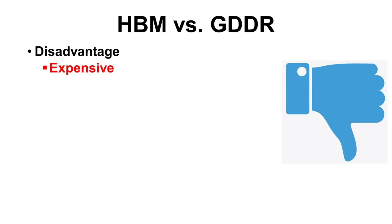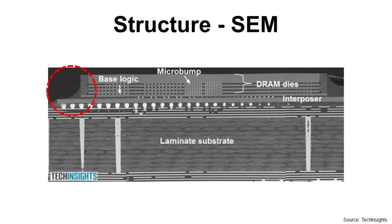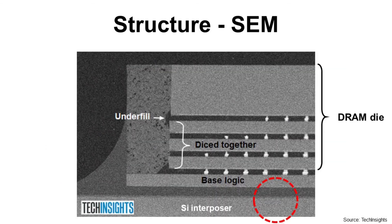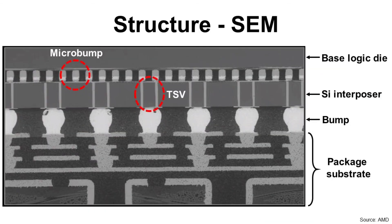Let's check the structure of HBM with an actual product. It is an image from a scanning electron microscope for HBM. If you zoom in a little bit, you can see there are DRAM dies and underfill material between the dies. If you zoom in a little more, you can see TSB within the silicon interposer and micro bumps between the base logic die and the silicon interposer.